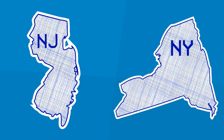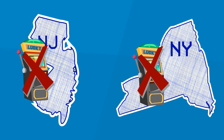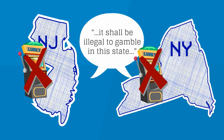So let's take two states, New Jersey and New York, and we'll say both states pass identical statutes — identical laws that say it shall be illegal to gamble in this state. No gambling in New Jersey and no gambling in New York.